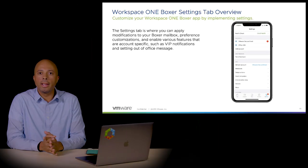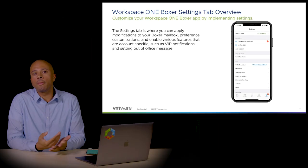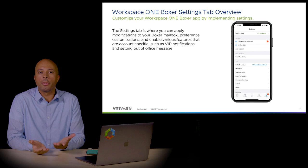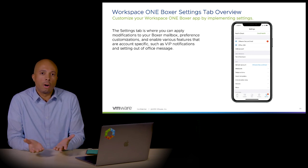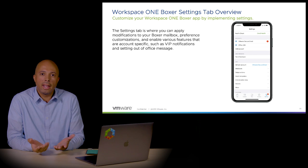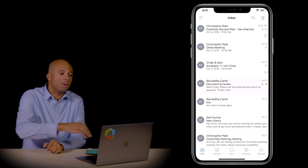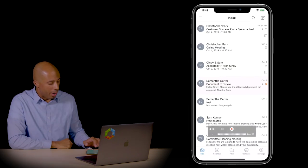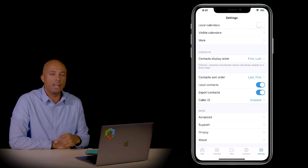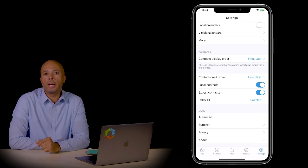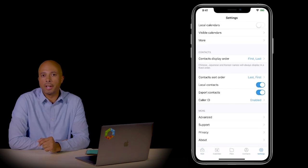The last tab we'll look at is the settings tab. We've gone back and forth in this tab configuring the other sections of this training, but let's just take a look at it and see an overview of what is actually contained in this area. If we look at it on the device, we can go ahead and click on settings, and you can see that it's broken down under different sections.